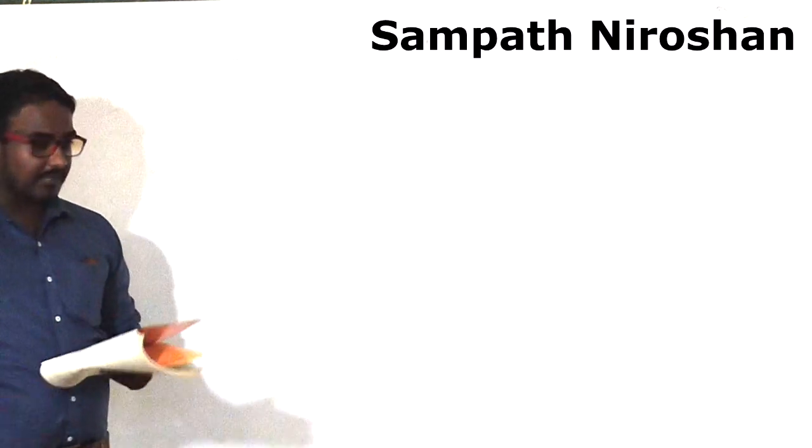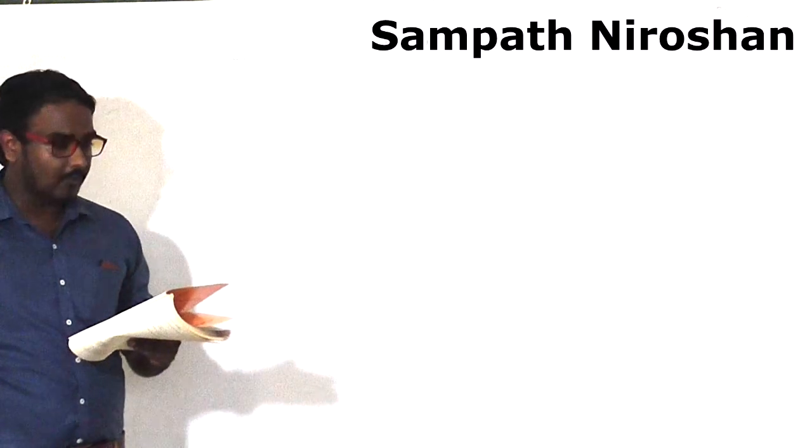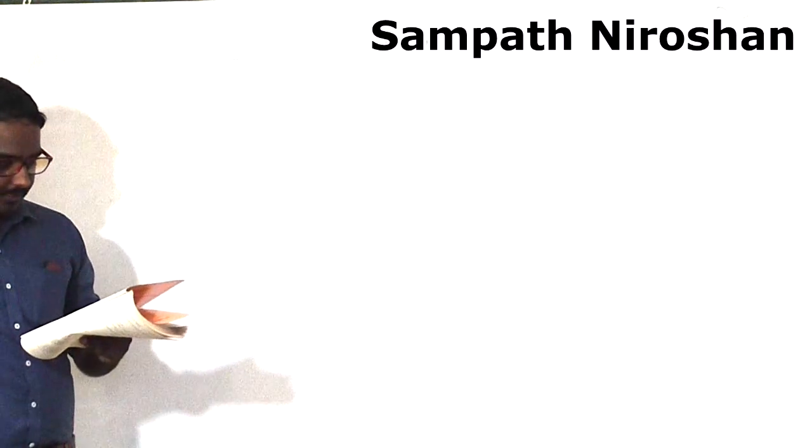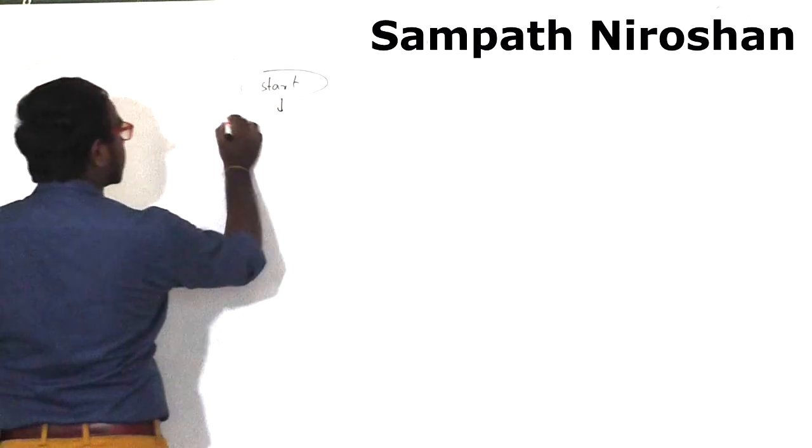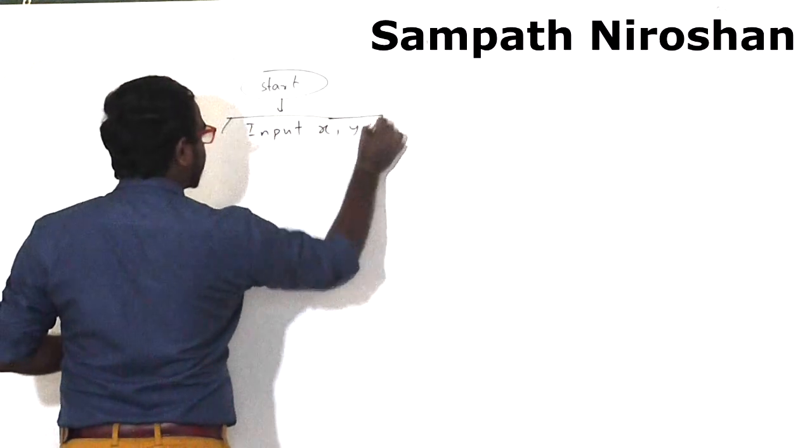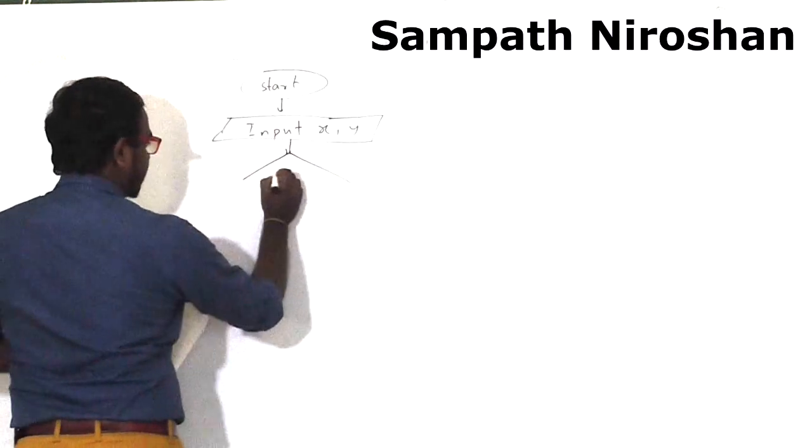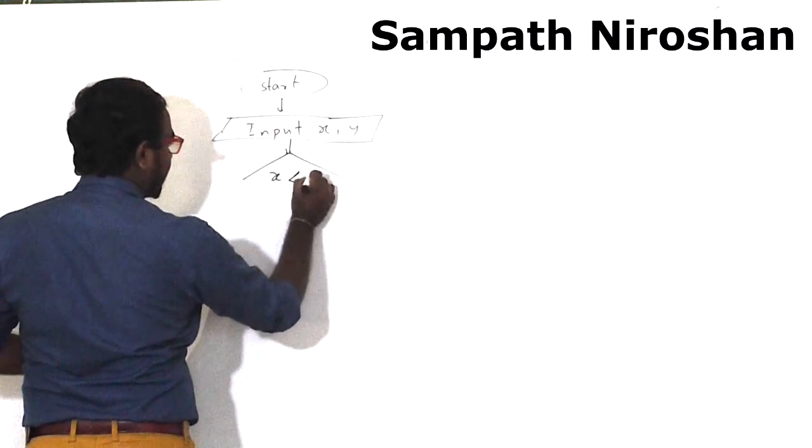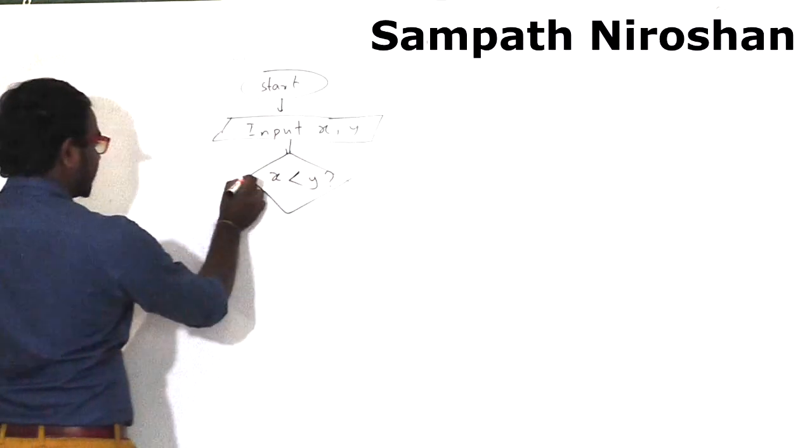Okay then, 2017 MCQ paper 1, question number 24. Consider the algorithm in the following flowchart. Let's generate the flowchart. Here I have start, then I am moving to input x, y. Then I have a decision: is x less than y?